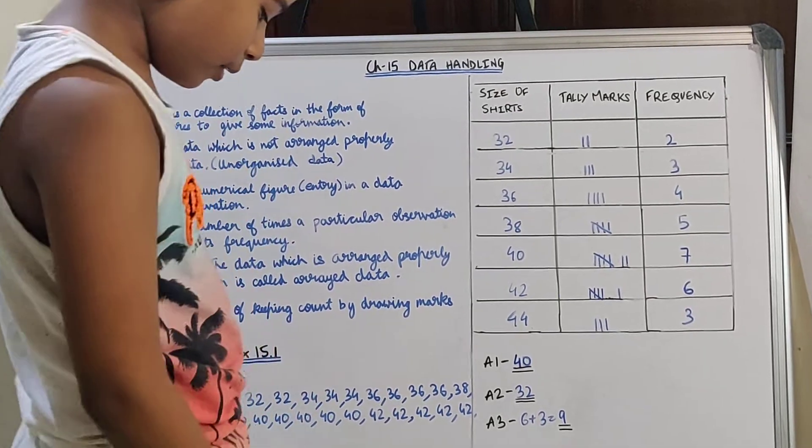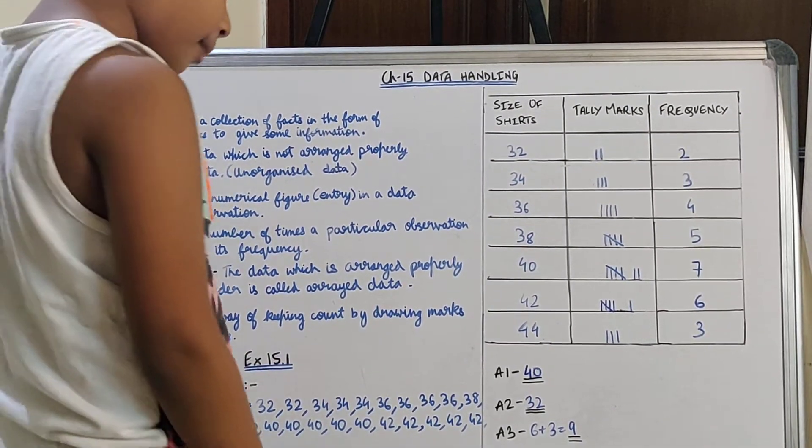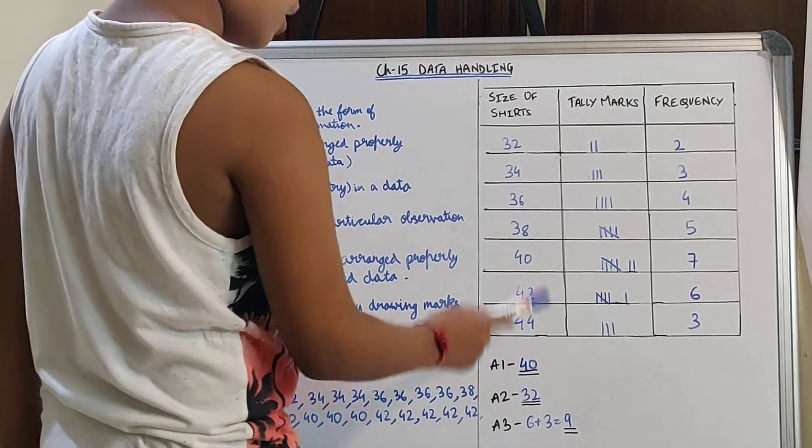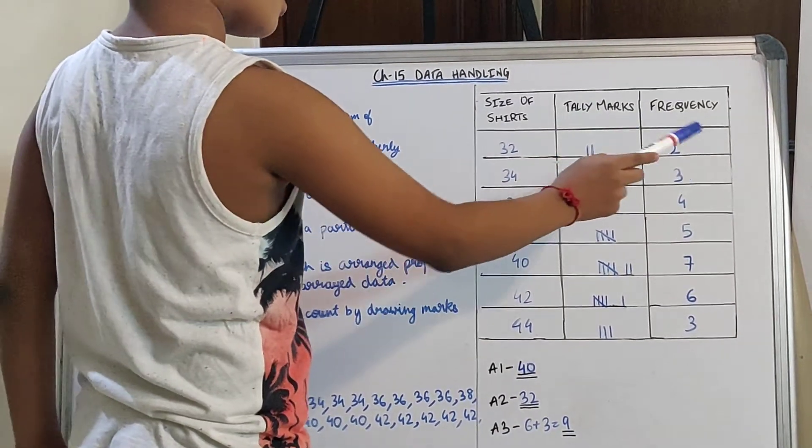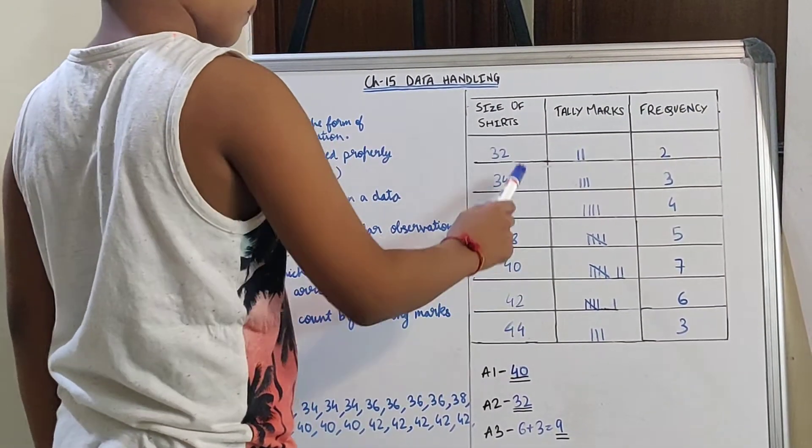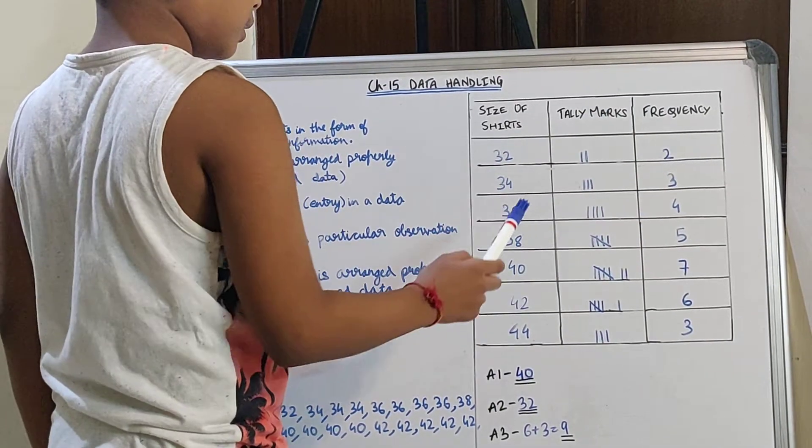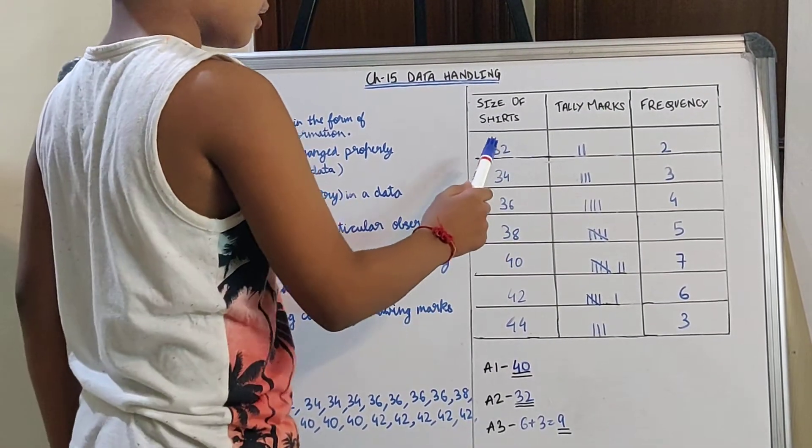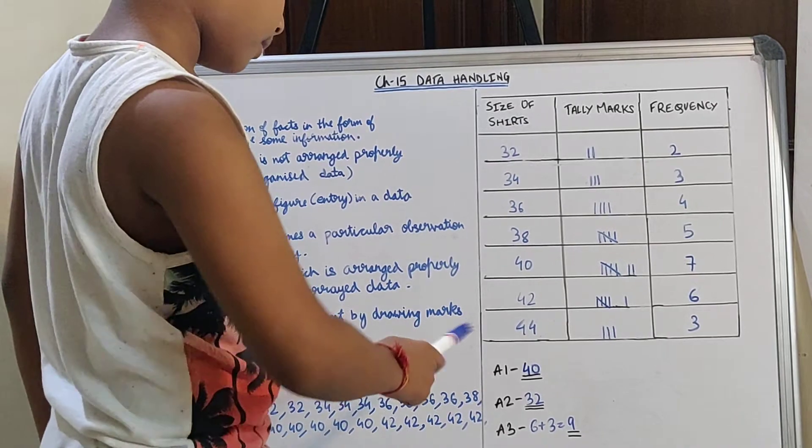Then the second. Which shirt size had minimum sale? Minimum sale. Now you can see that 32 has only 2 shirts sold. It's the minimum in the table. Minimum shirts were sold of 32 size. So 32.